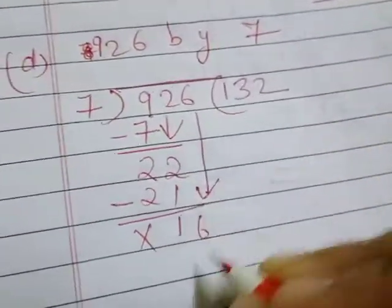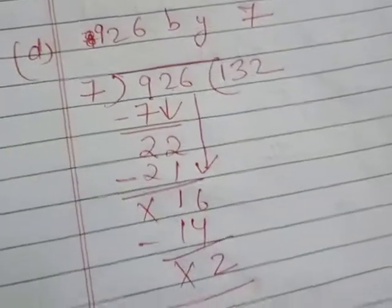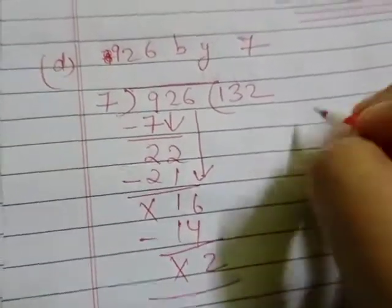Then 7 twos are 14. It will remain here 2. Got it? Now, we have to check.